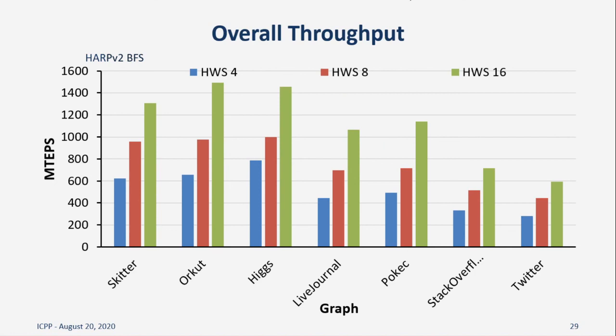Lastly, we show the throughput of BFS, which includes both the scatter and gather phases, for 4, 8, and 16 threads. Here we note the scalability in performance as we increase the number of threads.